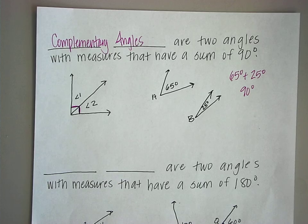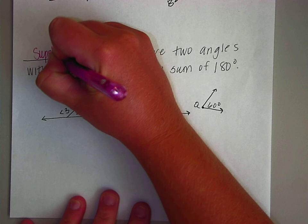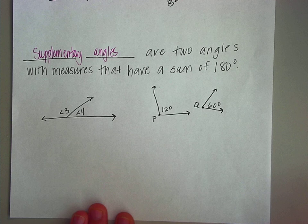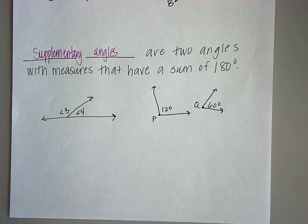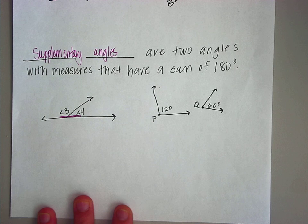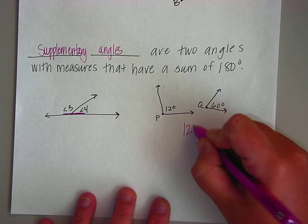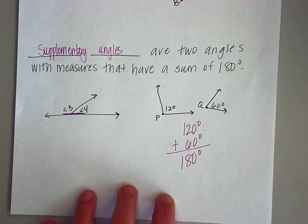Our next and final kind of angle relationship is supplementary angles. They have a sum of one hundred and eighty degrees. One hundred and eighty degrees from yesterday is a straight line. So angles three and four form a straight line — they are supplementary. If we add one hundred and twenty plus sixty degrees, that gives us one hundred and eighty degrees as well. So those are also supplementary angles.